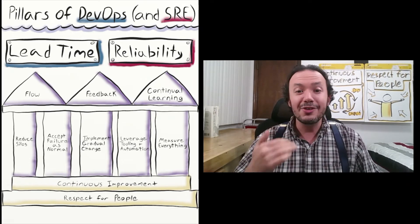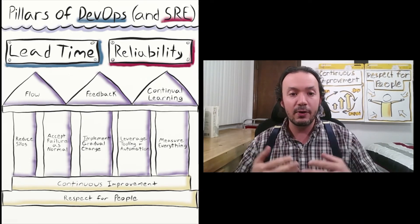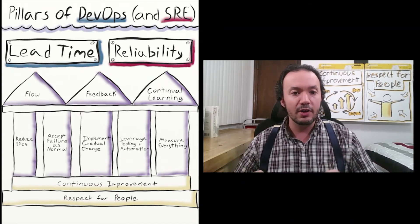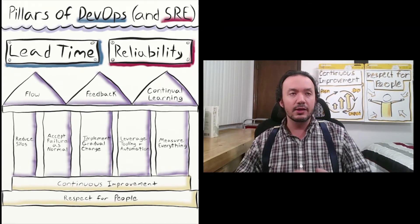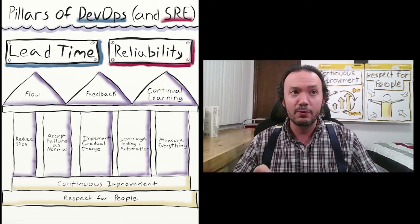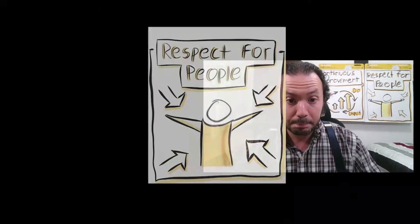None of this works without resting on a foundation of the two fundamental concepts of lean thinking: continuous improvement and respect for people.